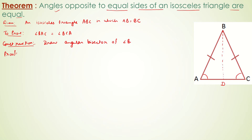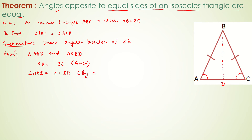Now, to prove this, we will take triangle ABD and triangle CBD. We have AB is equal to BC — this is given to us. Angle ABD is equal to angle CBD — this is by construction. And BD is equal to BD, that is common.